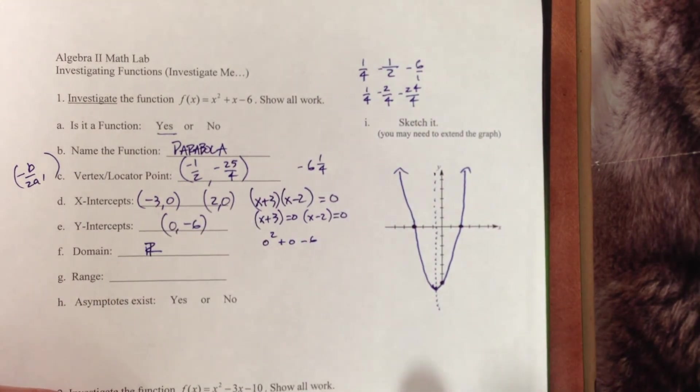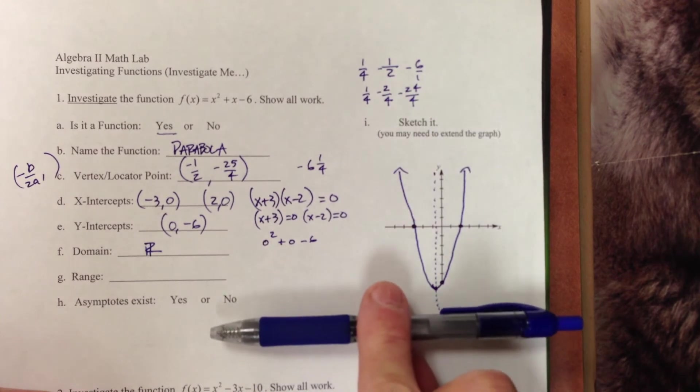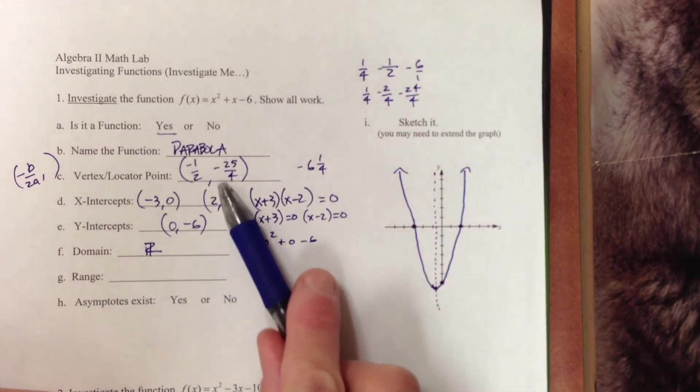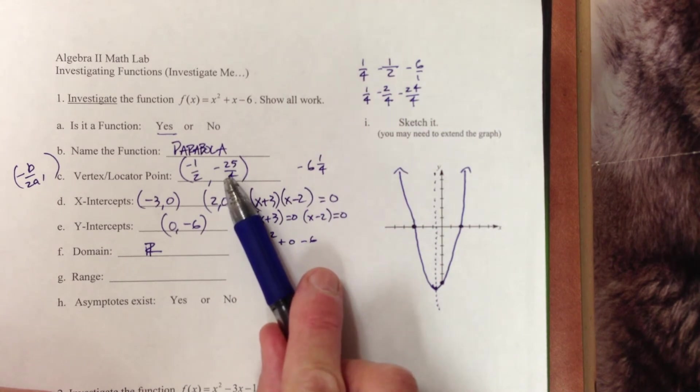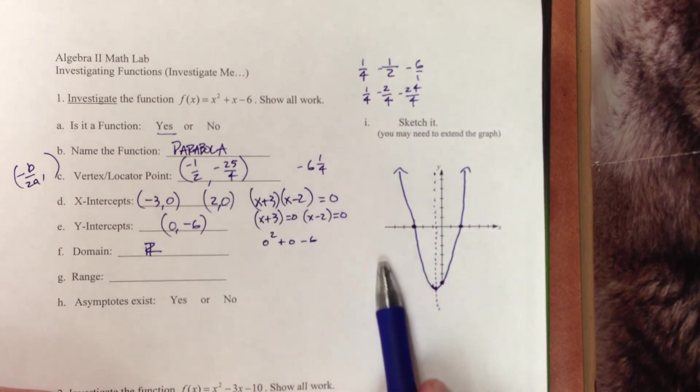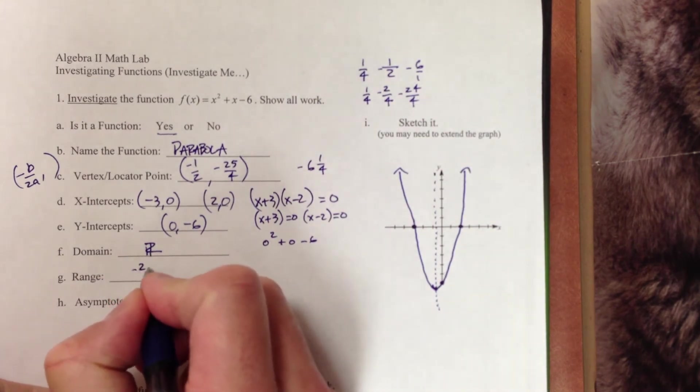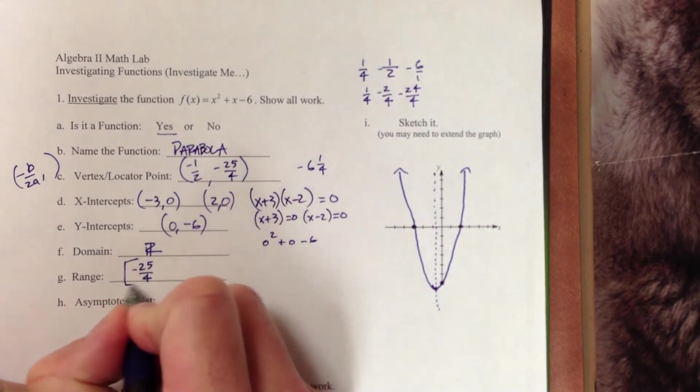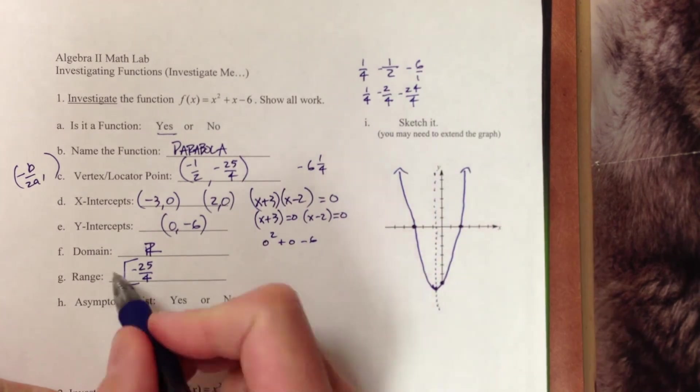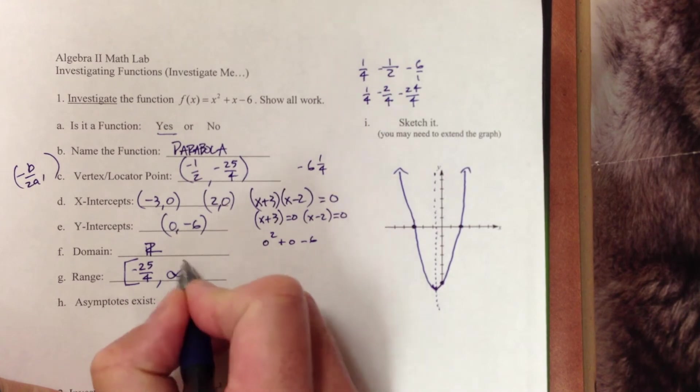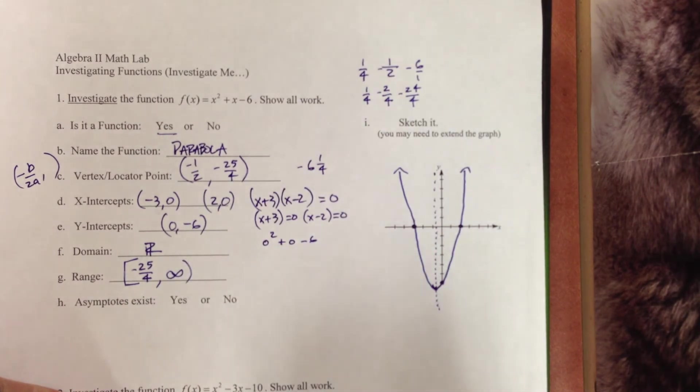So domain would be all real numbers. Range, pretty much the same thing, except we are working our way from the bottom up. So where do I first encounter my graph? And it just so happens to be the y value of my vertex, my locator point in this scenario, because my graph opens up. That happens to be the lowest point. So I first encounter at negative 25 fourths. And that point is included. It is solid line, so I give it the bracket. And it goes to positive infinity. Always using parentheses on that.